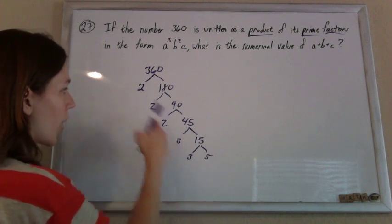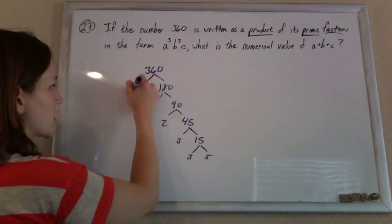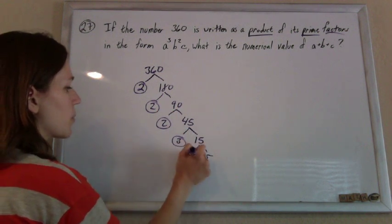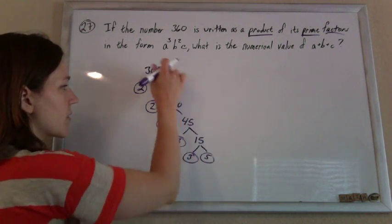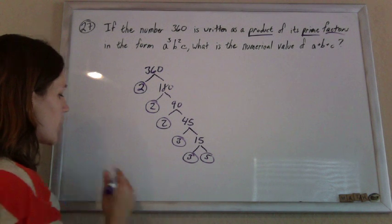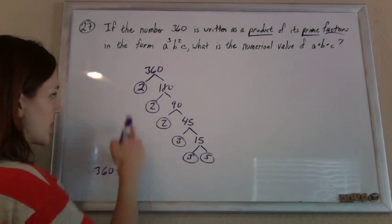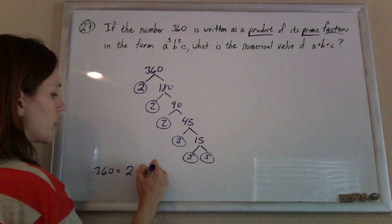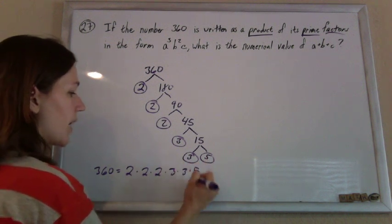Now they're all prime on the ends of the branches, so you're just looking at the ends of the branches. None of this stuff in the middle matters anymore. So what this means is that 360 is 2 times 2 times 2 times 3 times 3 times 5.